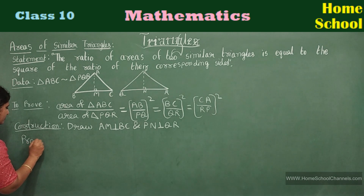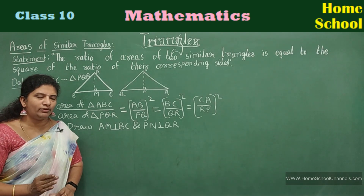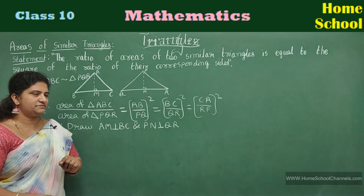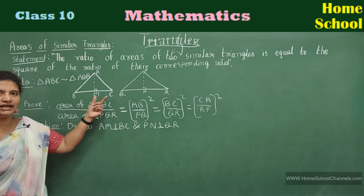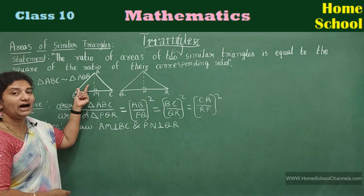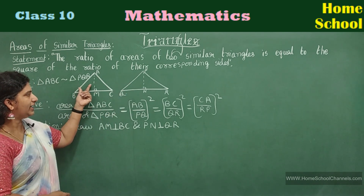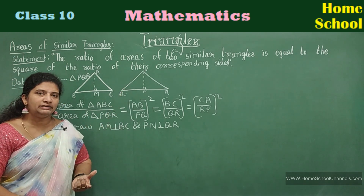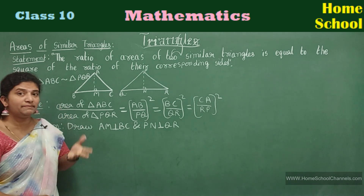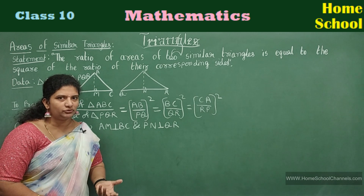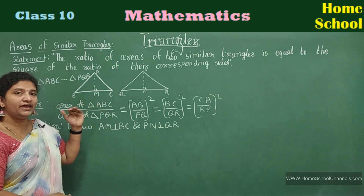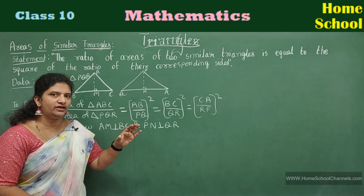Proof. While proving this theorem, I am going to inform you about three steps. First step: find the area of both triangles, divide them, and you will get something — mark it the first equation. Second step: take the smaller triangles, triangle ABM and triangle PQN, prove them similar, and their ratios are in proportion — mark it the second equation. Third step: given the two big triangles are similar, write all their side ratios equal — mark it the third equation. Then substitute back into the first equation to prove the theorem.